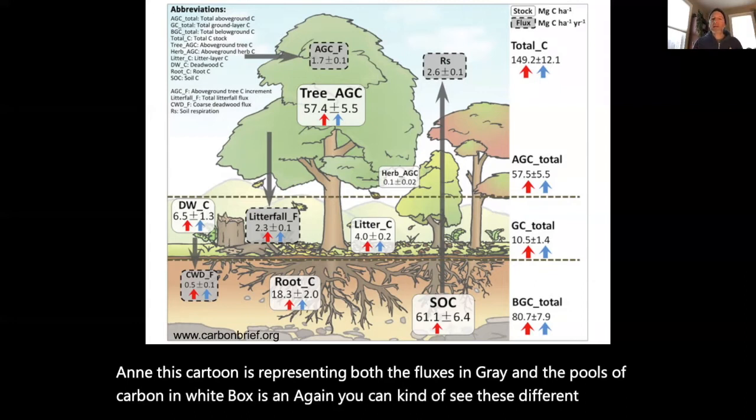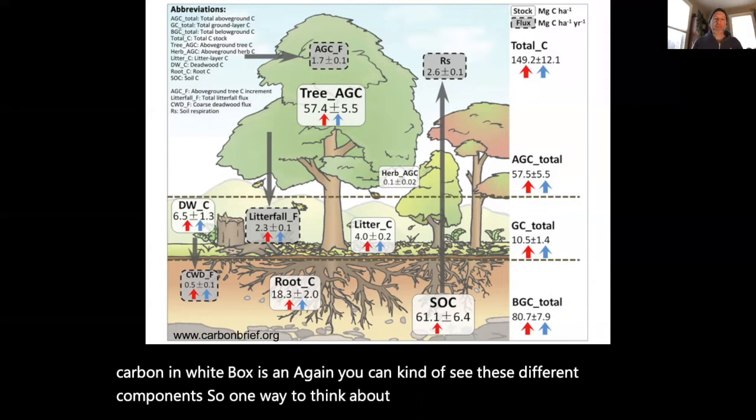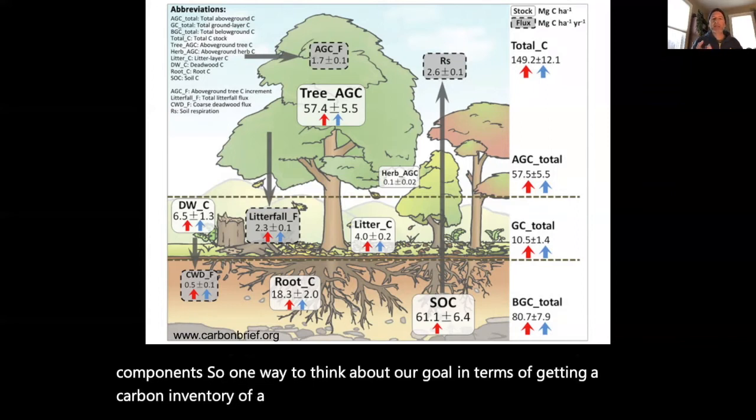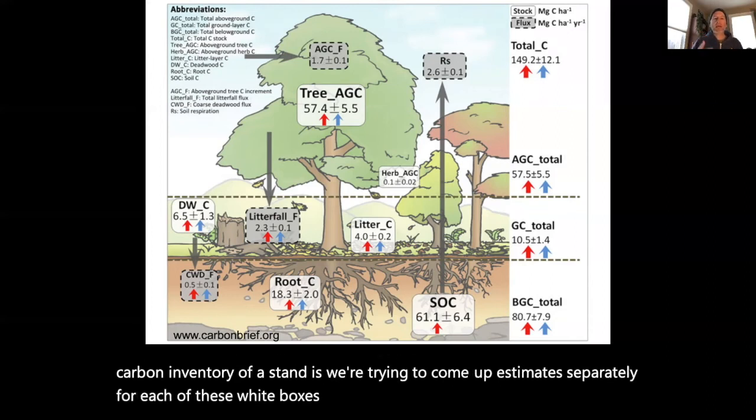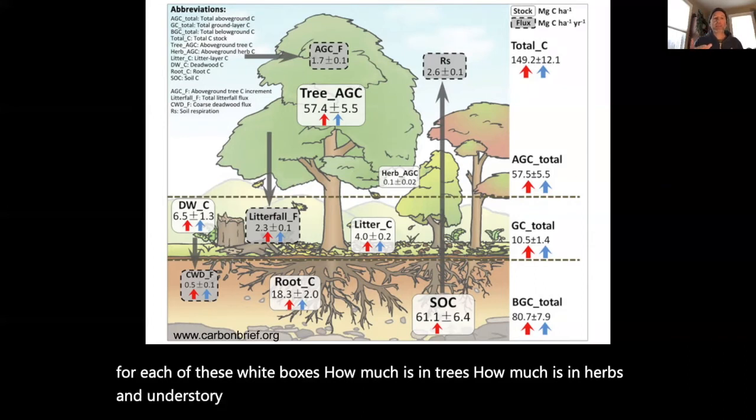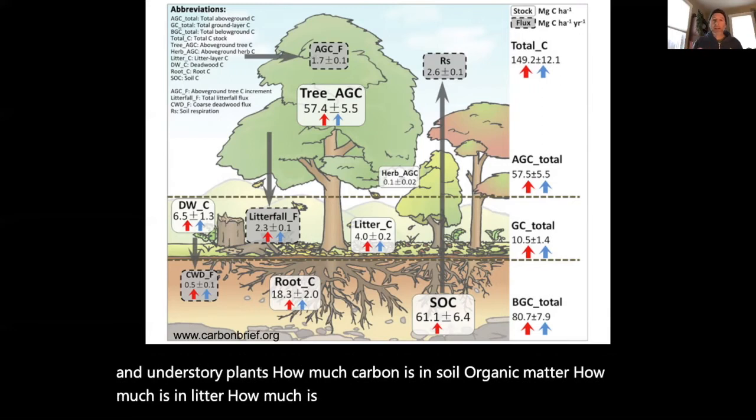One way to think about our goal in terms of getting a carbon inventory of a stand is we're trying to come up with estimates separately for each of these white boxes: how much is in trees, how much is in herbs and understory plants, how much carbon is in soil organic matter, how much is in litter, how much is in downwood, etc.